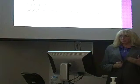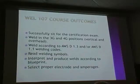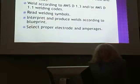The outcomes developed in the last module were: to successfully sit for the certification exam; to weld in the 3G and 4G positions — vertical and overhead; to weld according to AWS D1.3 and/or D1.1 welding codes; to read welding symbols; to interpret and produce welds according to a blueprint; and to select proper electrode and amperages.